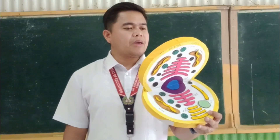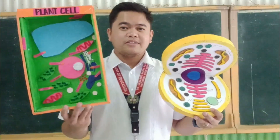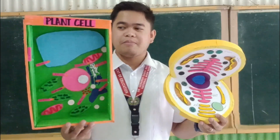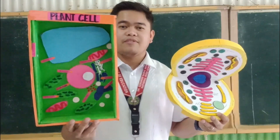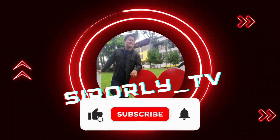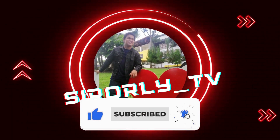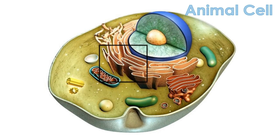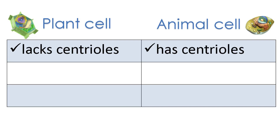This is an example of an animal cell, a 3D model made by Ginayan May Nagal. And in contrast, this is a 3D model of a plant cell made by Faith Janine Filesco. For this video, we will enumerate the cell organelles present in plant and animal cells. We will also differentiate plant and animal cells according to the cell organelles present.